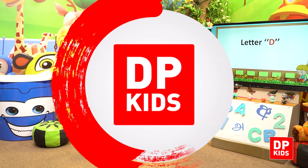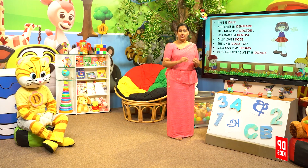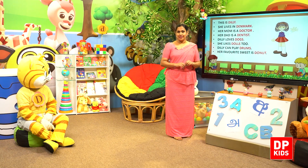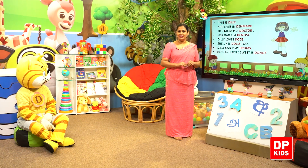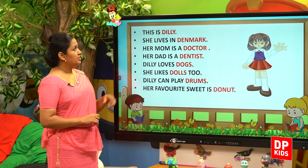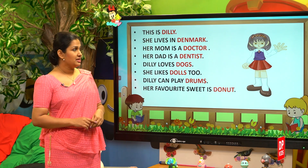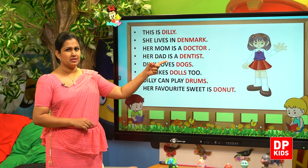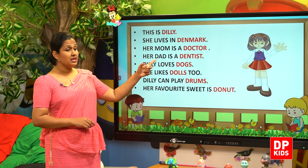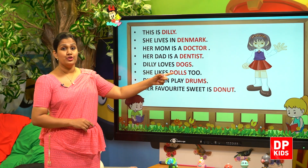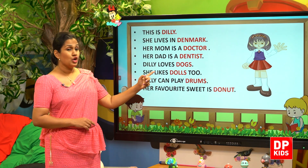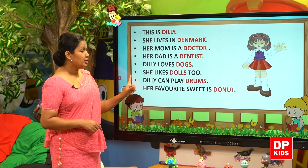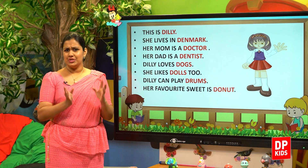Let's go to letter D. To introduce you to letter D, I selected some information about a small girl. This is Dili. She lives in Denmark. Dili, Denmark. Her mom is a doctor. Her dad is a dentist. Dili loves dogs. She likes dolls too. Dili can play drums. Her favorite sweet is donut.